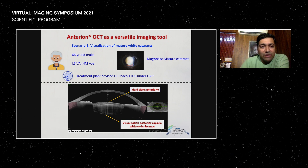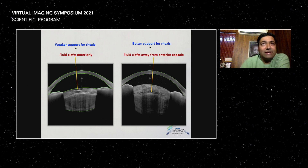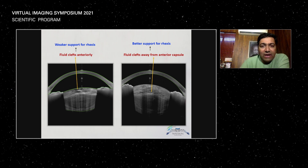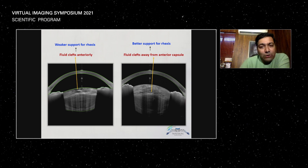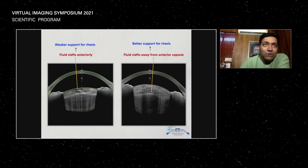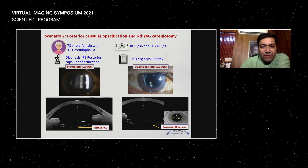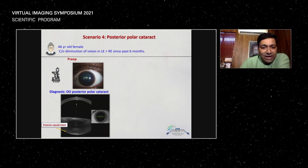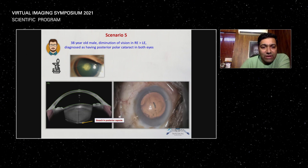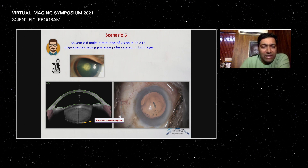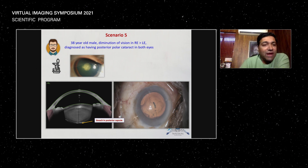This is important because it helps look at fluid clefts anteriorly and visualization of the posterior capsule. Based on this, you understand whether you're going to get excessive pressure in the capsule when you perform a capsulorhexis. If you have fluid clefts away from the anterior capsule, you know there's better support for the rhexis and you may not have an Argentinian flag sign — especially useful when training residents. It also looks at YAG capsulotomies pre and post, and posterior polar cataract. You can see that the posterior capsule is intact postoperatively, everything is fine. Here, you can see there's a breach in the posterior capsule — you can explain to the patient that there could be a posterior capsule rent, and this can be planned.